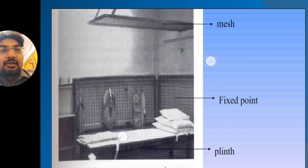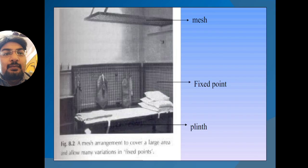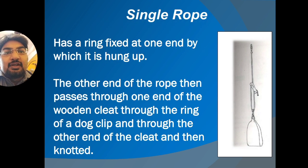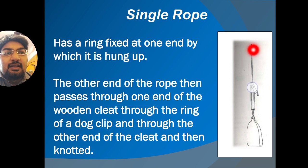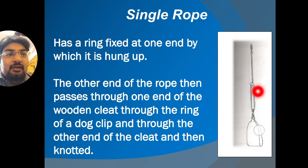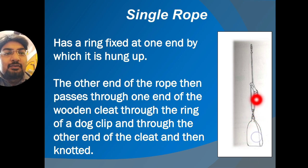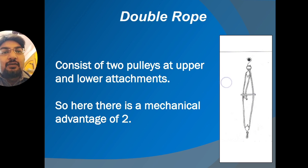Supporting ropes come in three types: single rope, double rope, and pulley rope. The single rope has a fixed point at one end by which it is hung. The rope is tied at the S hook, and the other end passes through one hole of the wooden cleat, then through the ring of the dog clip attached to the sling, back through the wooden cleat, where the knot is tied.